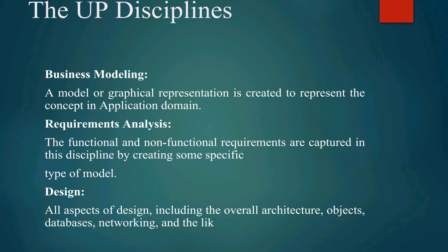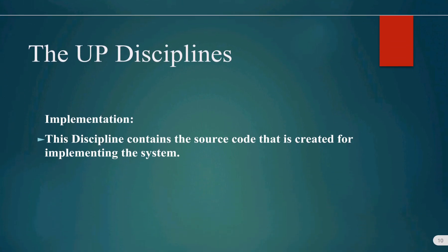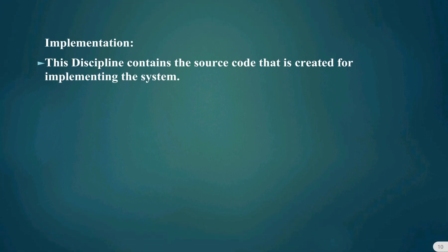Design: all aspects of design, including the overall architecture, objects, database, and networking, are designed in this phase. Implementation: the source code is created for implementing the system.